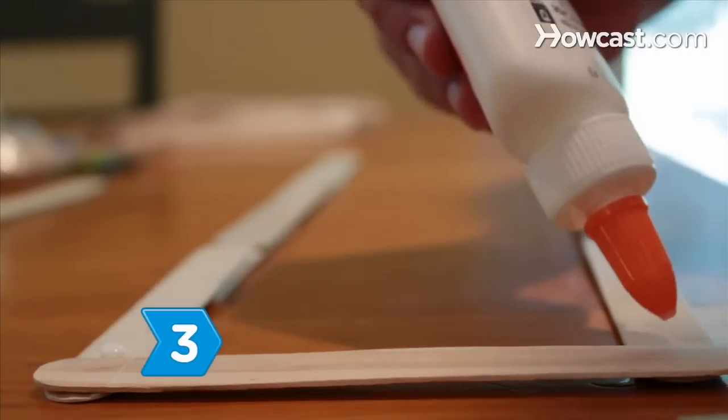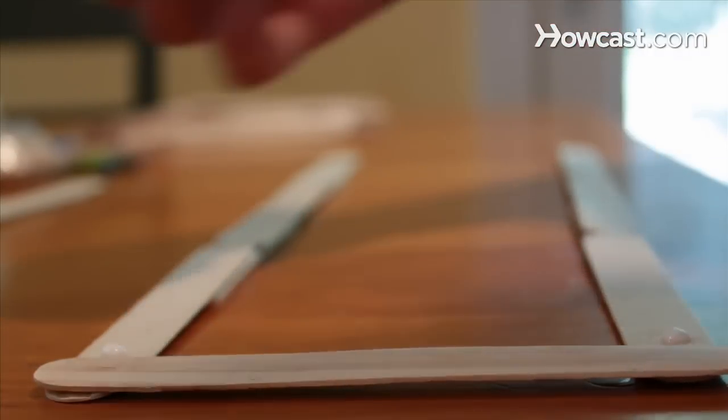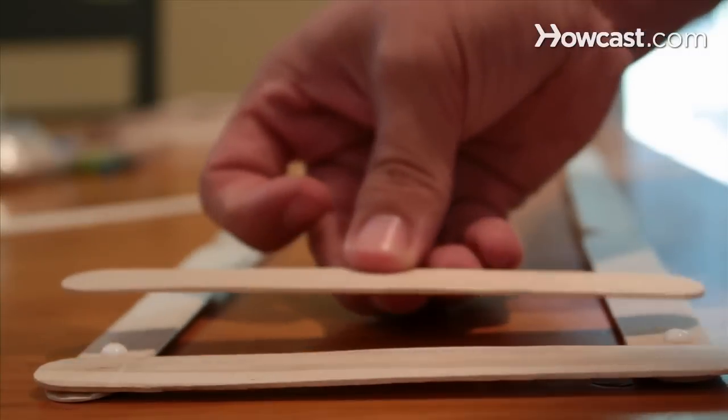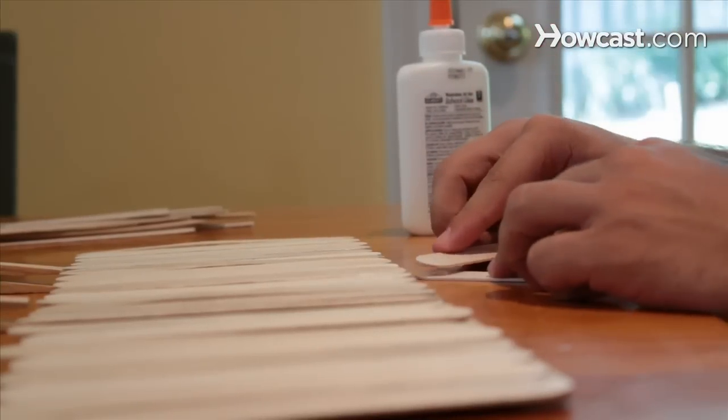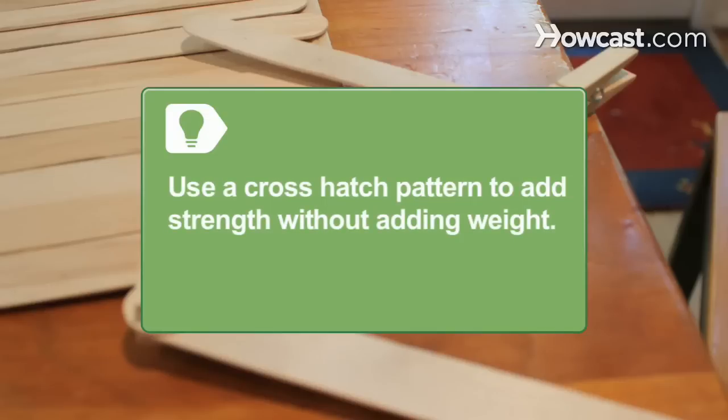Line additional popsicle sticks perpendicular to the main span to create the road deck, then angle sticks vertically to build the superstructure. Use a crosshatch pattern along the sides and under the road deck to build a bridge that is both strong and light.